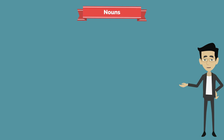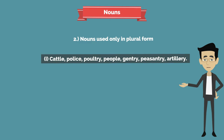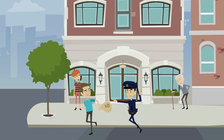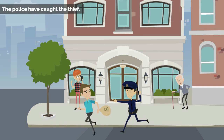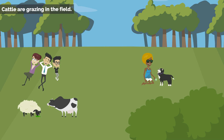The second category is nouns used only in plural form. First group: cattle, police, poultry, people, gentry, peasantry, artillery. Examples: 'The police have caught the thief.' 'Cattle are grazing in the field.'